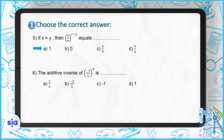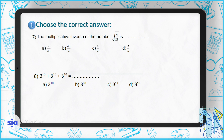Question 6: what is the additive inverse of (negative 2/5) all to the power of 0? Any number to the power of 0 equals 1, so (negative 2/5) to the power of 0 equals 1. The additive inverse of 1 is negative 1.